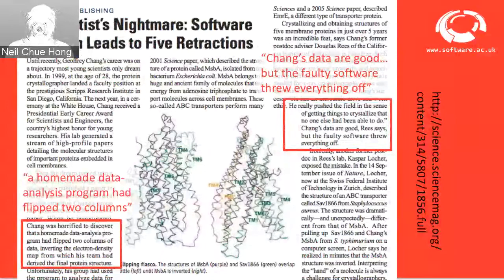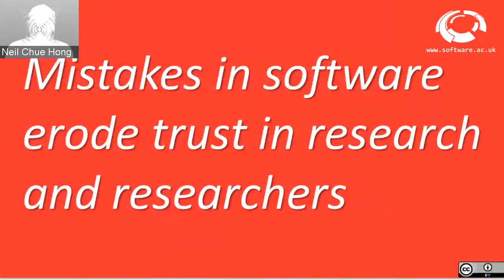We see this in other areas as well. What we have is an example of promising science where a small error in the software leads the entirety of that research output to be called into question. One of the challenges is that when we have mistakes in software, what they do is erode the trust in research and in researchers. That might mean researchers are less willing to share code, make it available, or publish it as part of their outputs.